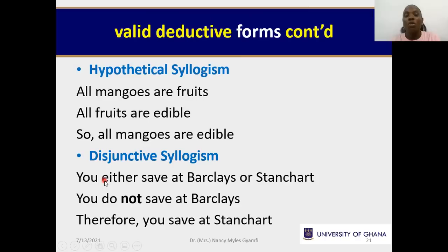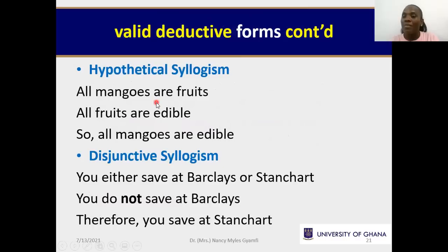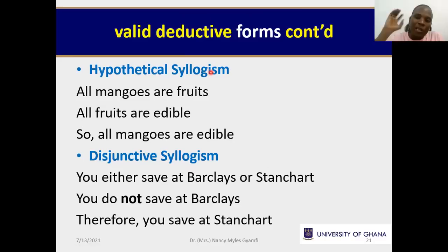Those of you who study formal logic will know this as a disjunction. Disjunction is not conditional — just as in mathematics, addition is not division. In hypothetical syllogism, the connective term is if-then, a conditional. In disjunctive syllogism, the connective term is either/or. Those distinctions should help you remember the types of valid forms.